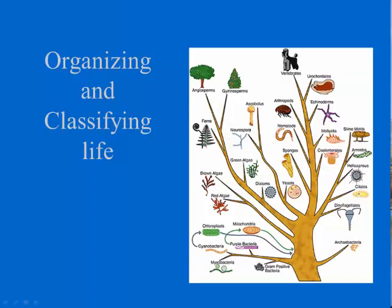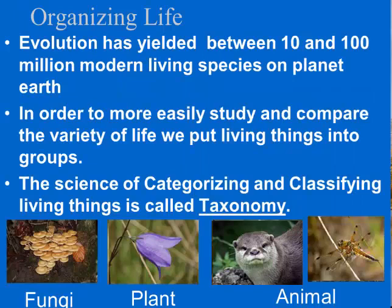Hello and welcome to Dove Biology Bio Lessons To Go. In this lesson we'll be examining the organization and classification of life. Evolution has yielded between 10 and 100 million modern living species on planet Earth. In order to more easily study and compare the variety of life, we've put living things into groups or categories. The science of categorizing and classifying living things is called taxonomy.